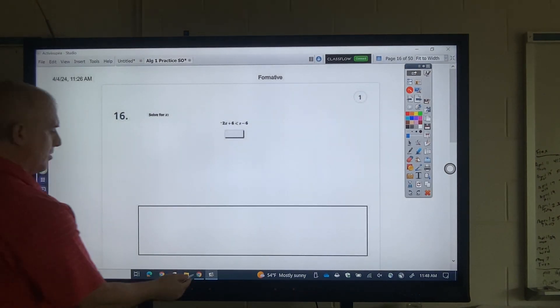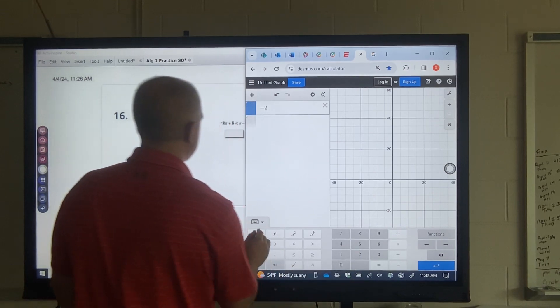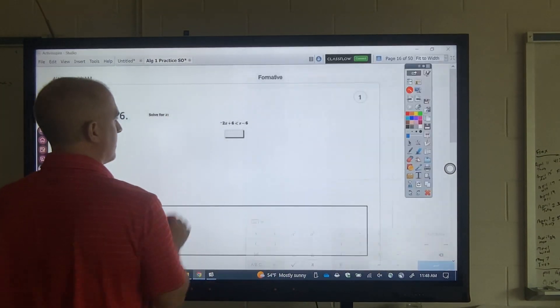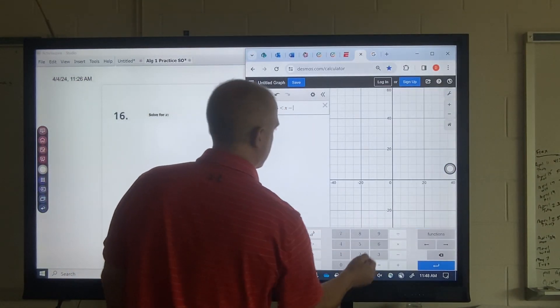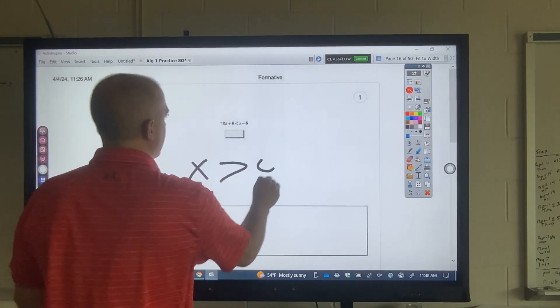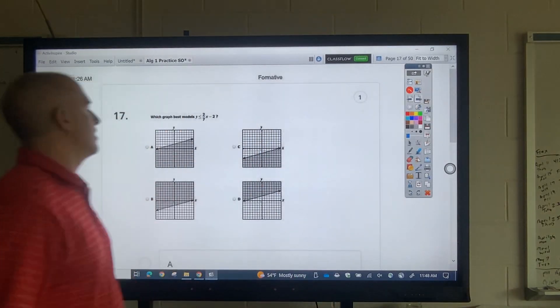Okay. Here's another one. Negative 2x plus 6. Less than x minus 6. That's going to be 4. And since it's right, x is greater than 4 because it went to the right. Okay.